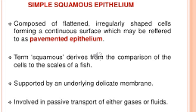Continuing with simple squamous epithelium — it is composed of flattened, irregularly shaped cells which form a continuous surface. That is why they are referred to as pavemented epithelium. The term 'squamous' is derived from its resemblance to scales of a fish. These cells are polygonal in outline. The free surface of each flat cell faces towards the lumen while the basal surface rests on the basement membrane. They have a wavy margin and fit very closely to the adjacent cell. When viewed from the top they give a mosaic-like appearance.